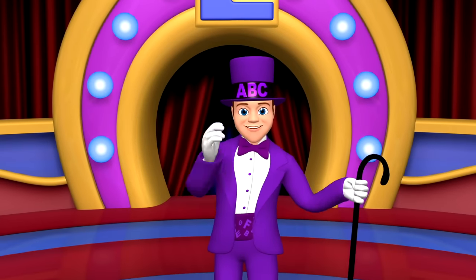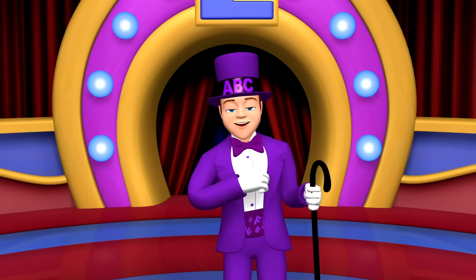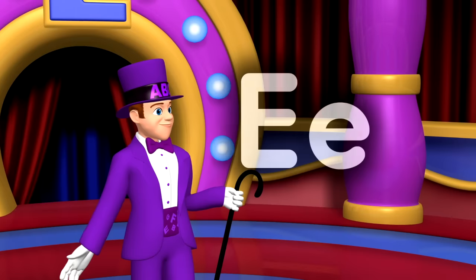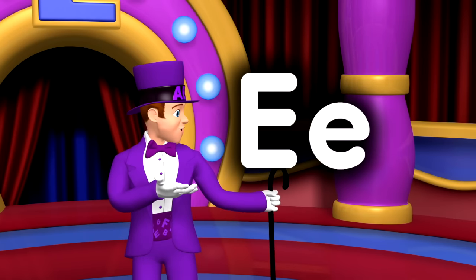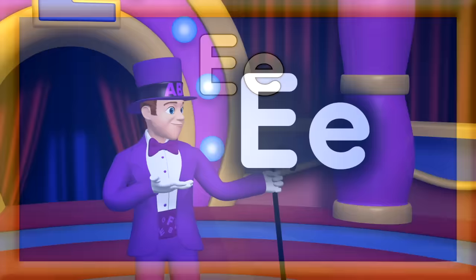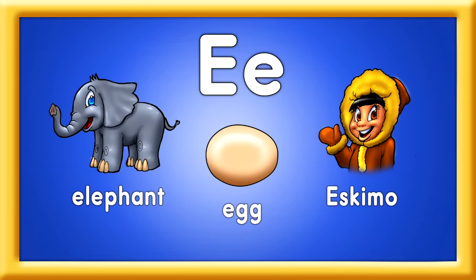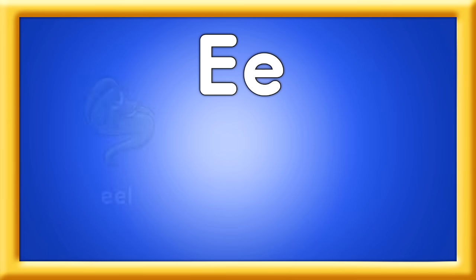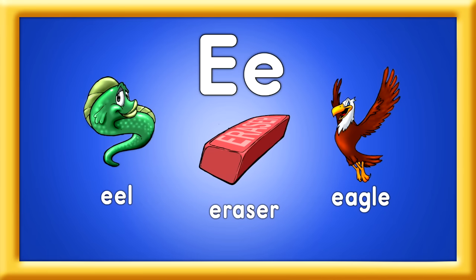Excellent. We've learned the letters A, B, C, and D. Now let's learn the letter E. See the capital E and the lowercase e? Elephant, egg, and eskimo. These are some of the E words I know. Eel, eraser, and eagle, too. These are E words just to name a few.